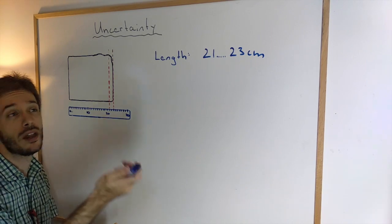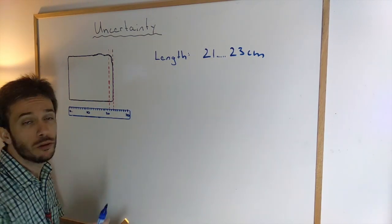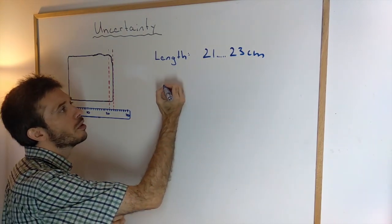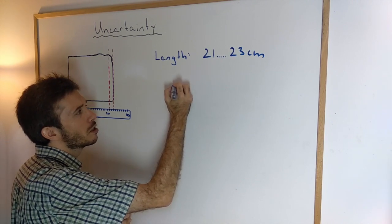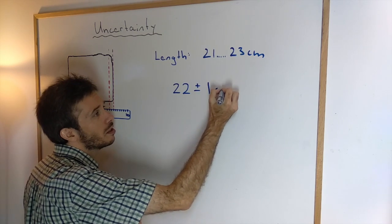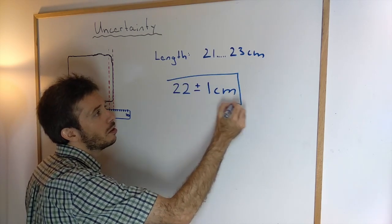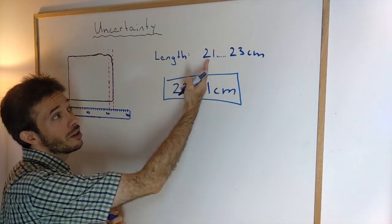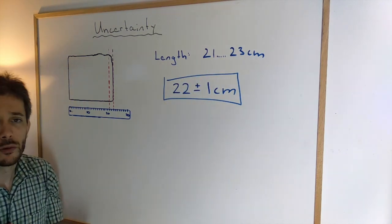Now, instead of writing it could be anything from 21 to 23 centimeters, we're going to be writing it is 22 plus or minus 1 centimeter, which includes everything from 21 to 23.